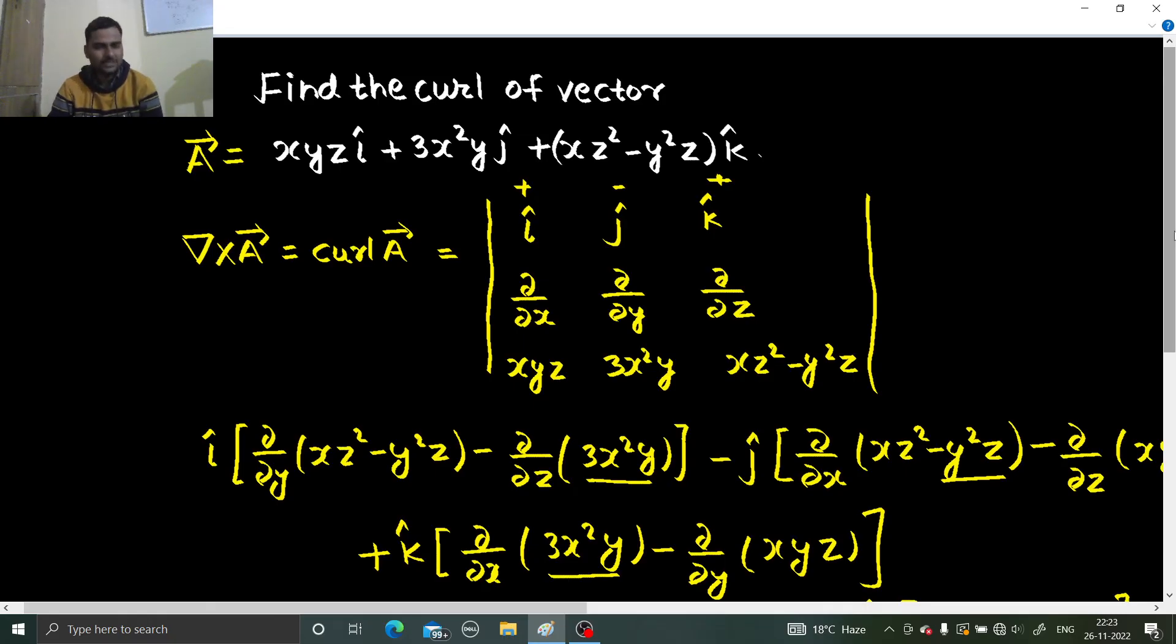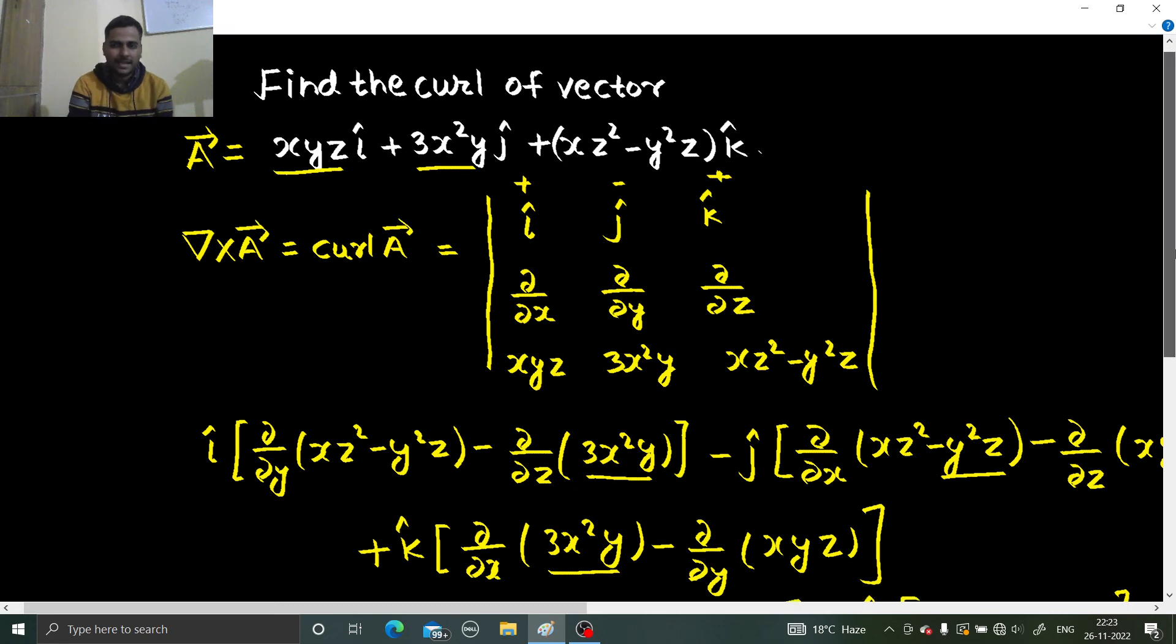Again, it's simple. Just the determinant needs to be solved. Write i cap, j cap, and k cap. Below that write del by del x, del by del y, and del by del z. Below that, write from the vector: xyz, this, and this. And simply solve.